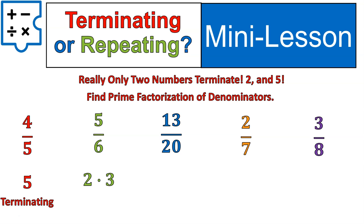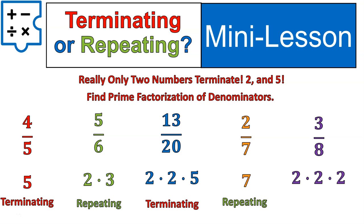The prime factorization of 6 is 2 times 3. So although it does have a 2 in it, it also has a 3, which is a repeating decimal number. However, it is not made up of only twos and fives. So therefore, it's repeating. Let's look at the number 20. 20 in prime factors is 2 times 2 times 5. That is made up of only twos and fives. Therefore, it is a terminating decimal. 7 is a prime number, not a 2 or a 5. Therefore, it's a repeating decimal. And 3 over 8, 8 as a prime factor is 2 times 2 times 2. Those are all factors of either 2 or 5. Therefore, it's a terminating decimal.